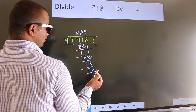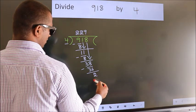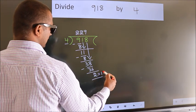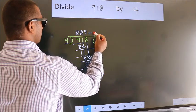No more numbers to bring it down. So, we stop here. This is our remainder. This is our quotient.